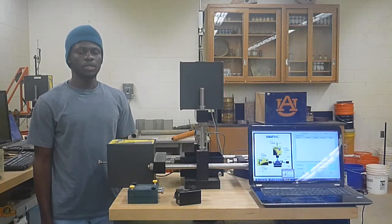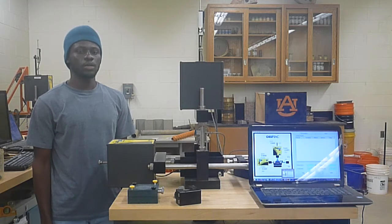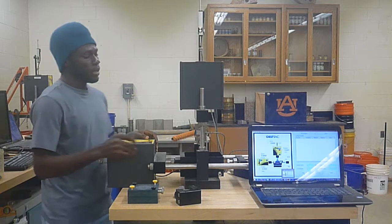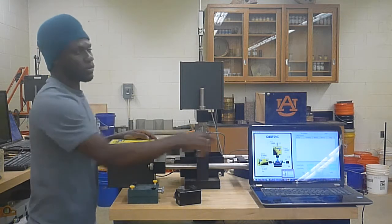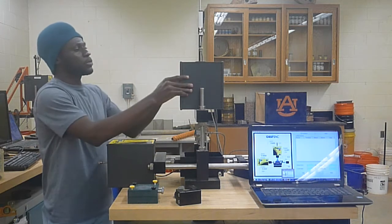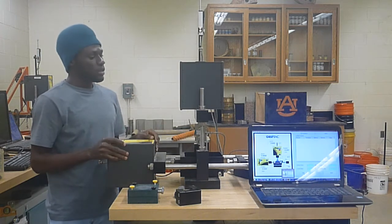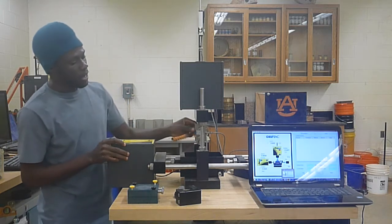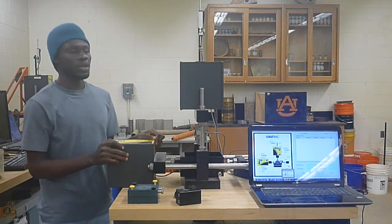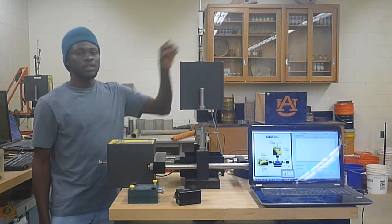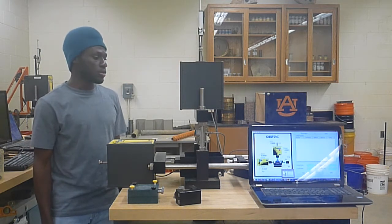This is the load frame set up for the direct shear test here in the lab. Here is a horizontal load cell. It has a load cell attached to it here for the shear force. And that has a maximum capacity of 2000 pounds. Here also is the vertical load cell. It has a load cell attached to it here for the normal force. This also has a maximum load capacity of 2000 pounds. This is a displacement transducer. It measures the vertical displacement of the soil as it undergoes testing.